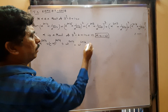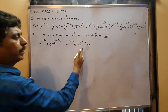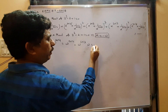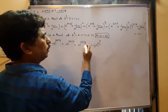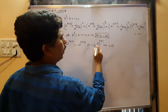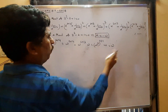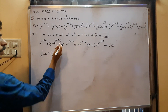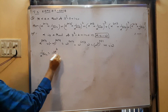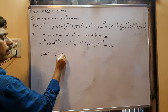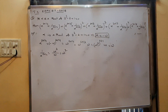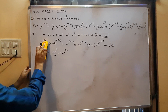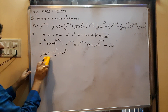So ω^2014 = ω^2013 · ω = (ω³)^671 · ω = 1^671 · ω = ω. Therefore α^2014 = ω. And 1/α^2014 = 1/ω = ω² (since ω³ = 1, so 1/ω = ω²). Thus α^2014 + 1/α^2014 = ω + ω² = −1.